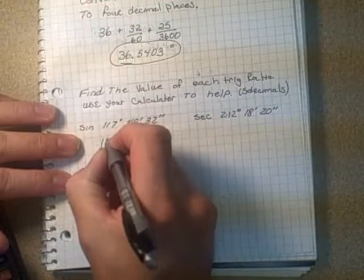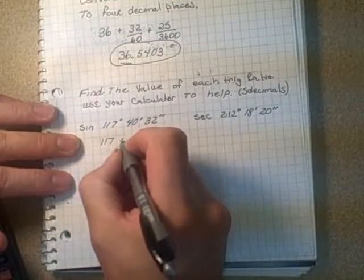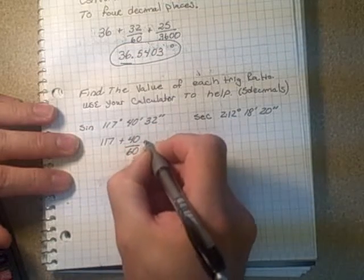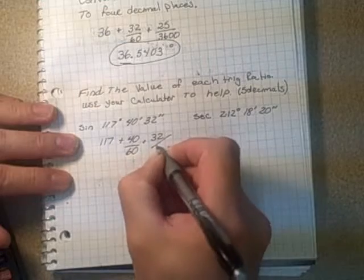This would be 117 plus 40 over 60 plus 32 over 3600.